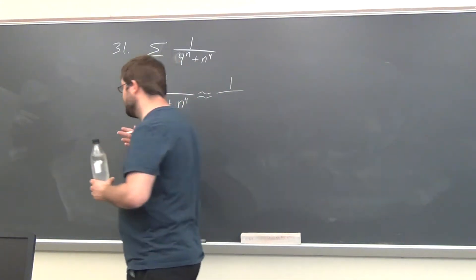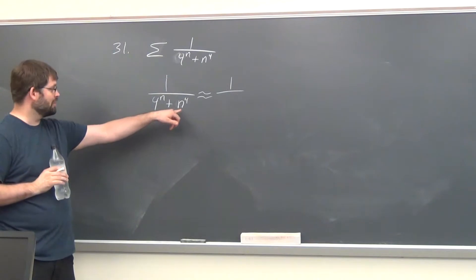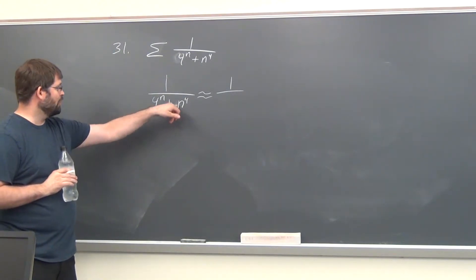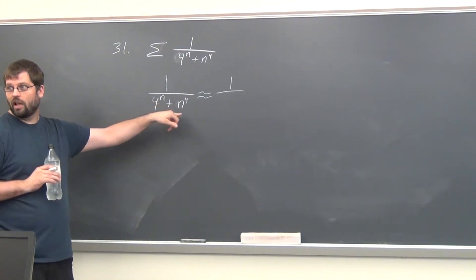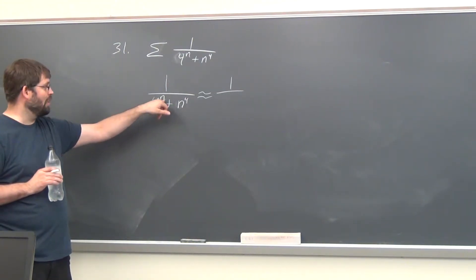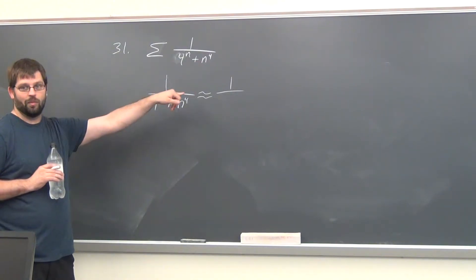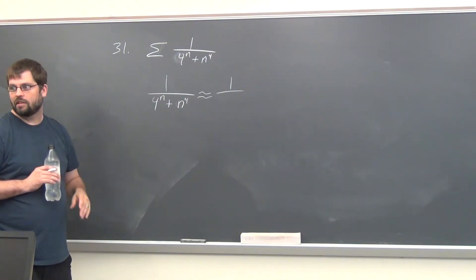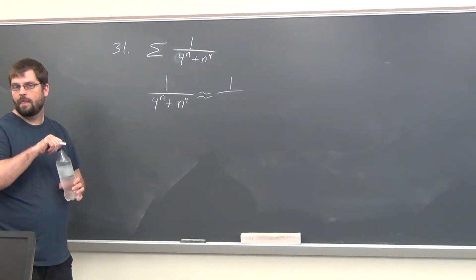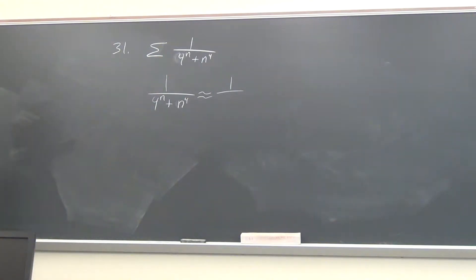For the first few values, this might be true. When n is two, you're the same. When n is three, you get 81 and 64. So this one's a little smaller for small values, but if you think of a million, 4 to the million power is going to be much bigger than a million to the fourth power.